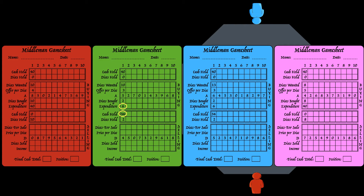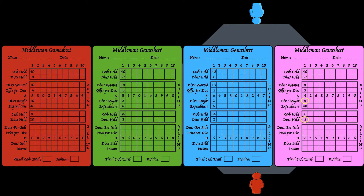Green player now has 34, having spent 6 of the 40. Blue player now has 34, having spent 6 of the 40. Purple player has no cash, having spent 40 of the 40. For disks held: red player now has 10 disks, having bought 10 and started with none. Green player now has 2 disks, having bought 2 and starting with none. Blue player now has 2 disks. And purple player has 8 disks, having bought 8 and starting with none.